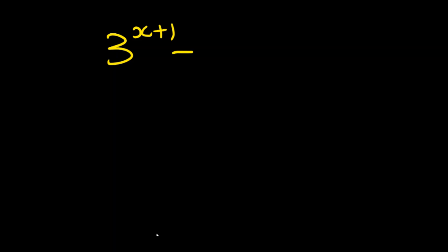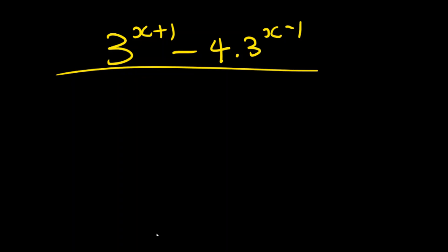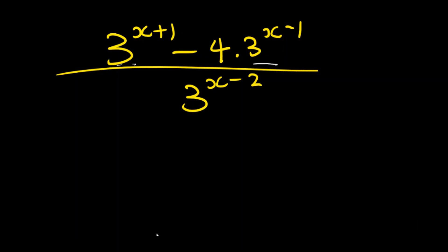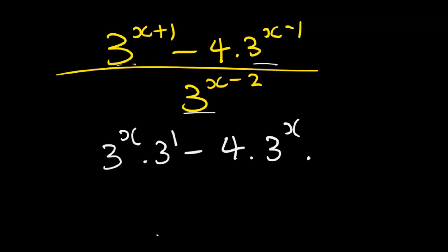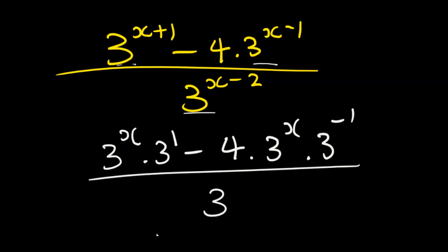Let's do this problem: we have 3 to the power of x plus 1, minus 4 multiplied by 3 to the power of x minus 1, divided by 3 to the power of x minus 2. The first thing we're going to do is expand these exponents. We expand them so we have 3 to the power of x multiplied by 3 to the power of 1, minus 4 times 3 to the power of x multiplied by 3 to the power of minus 1, divided by 3 to the power of x multiplied by 3 to the power of minus 2.